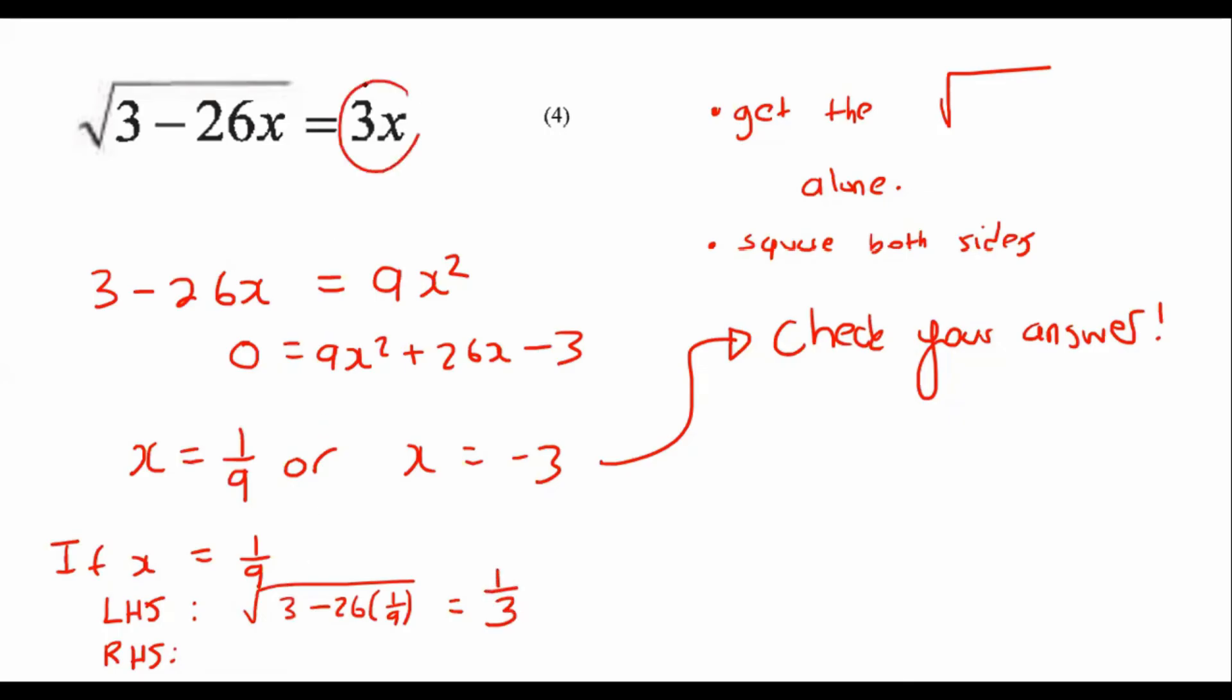Then I'm going to put the right-hand side, so that'll be 3 times 1 over 9, and that also gives me 1 over 3. So therefore, left-hand side is the same as the right-hand side, and so that's good. This one is good.